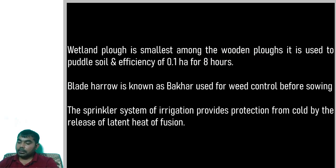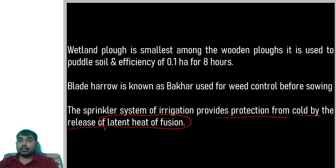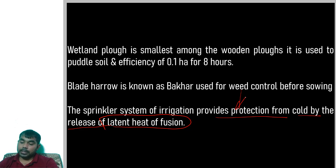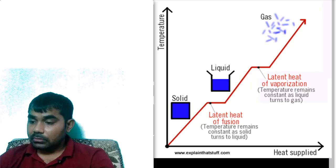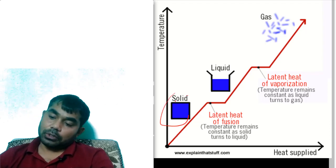The sprinkler system of irrigation provides protection from cold by the release of latent heat of fusion. When crops are at risk from cold temperatures, sprinkler irrigation protects them. The sprinkler system mimics rainfall and when water freezes on the plant surface, the latent heat of fusion released keeps the temperature from dropping further, protecting the crop.